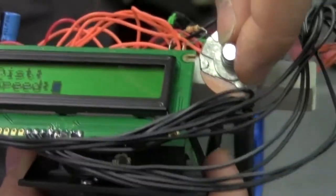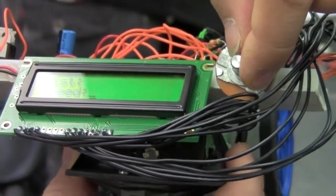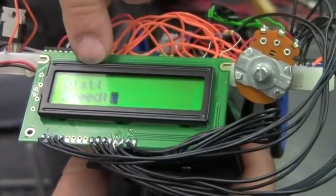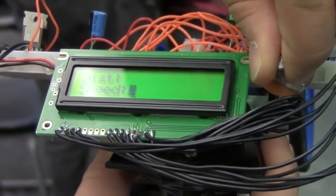And once I turn the pot here connected to the A to D that alters the speed of the motor through a PWM, you'll see this actually increments the way it's supposed to.